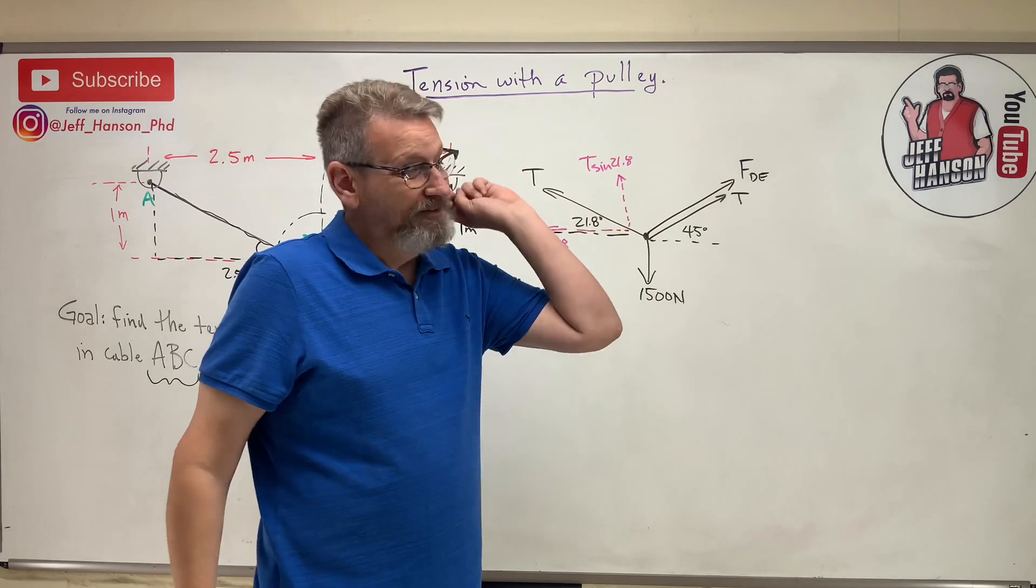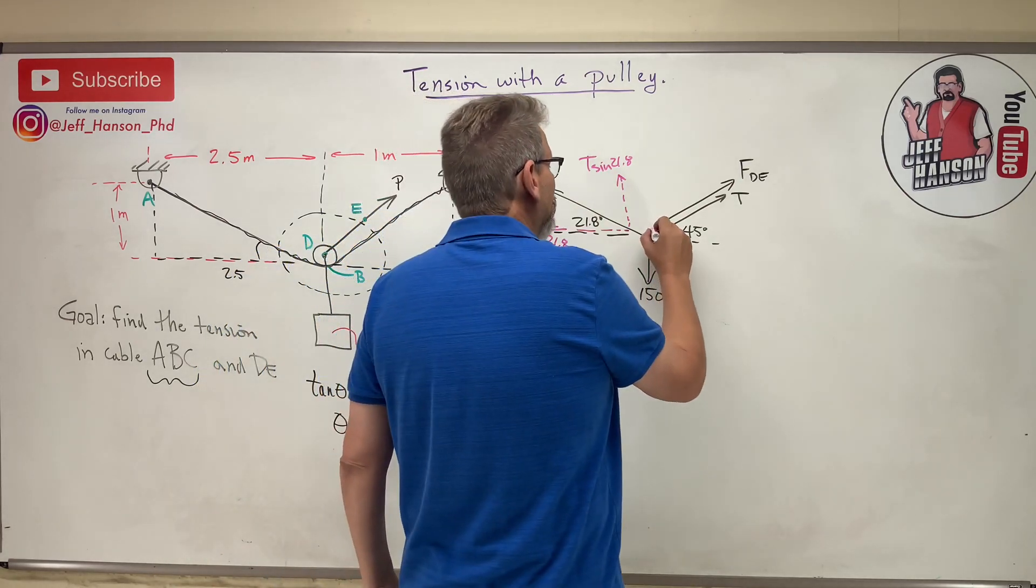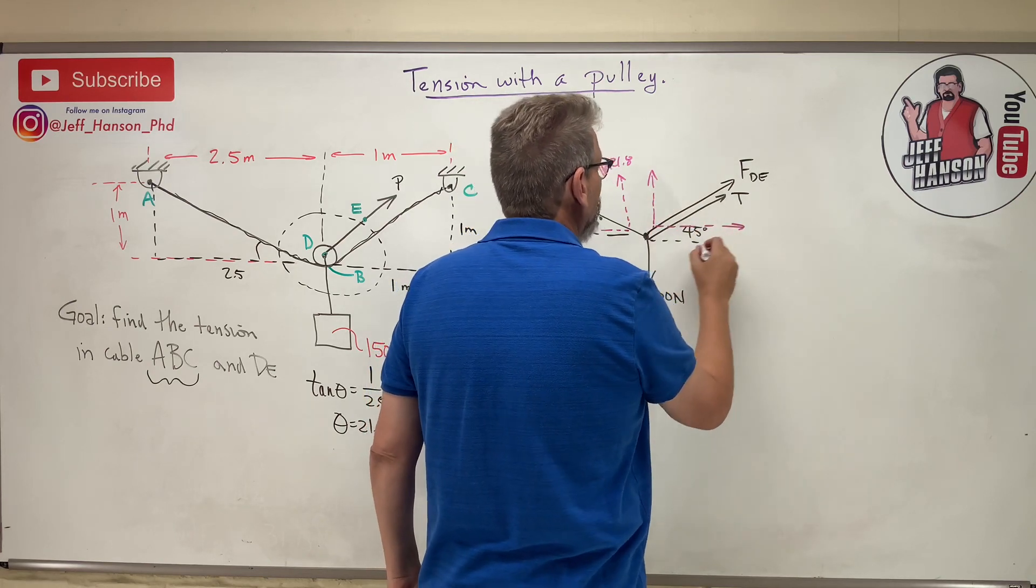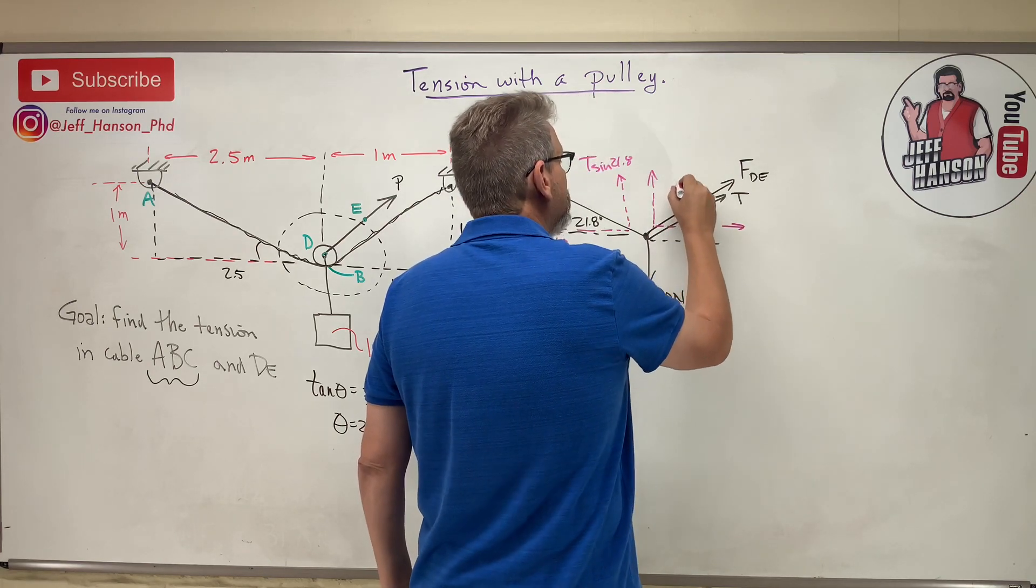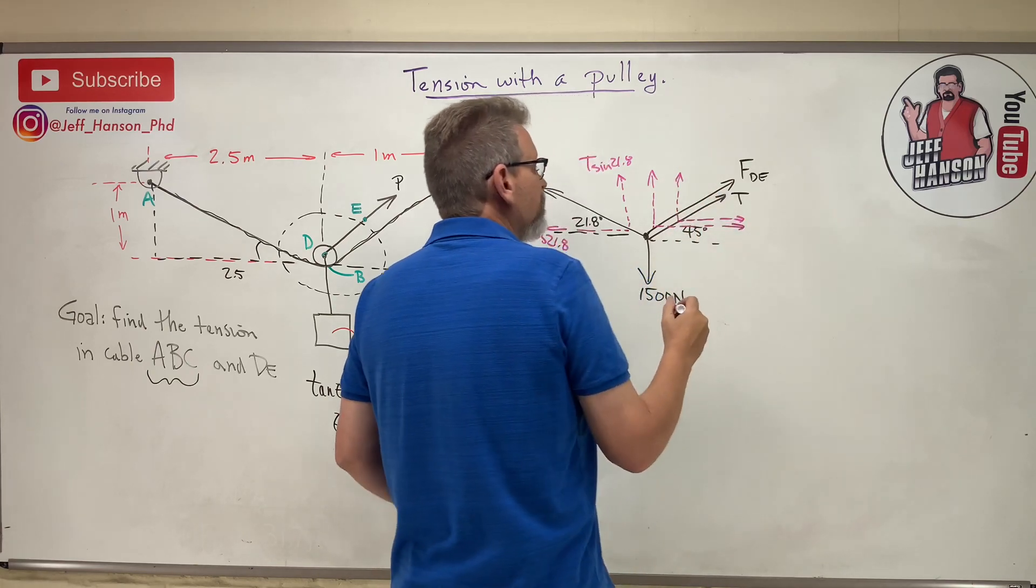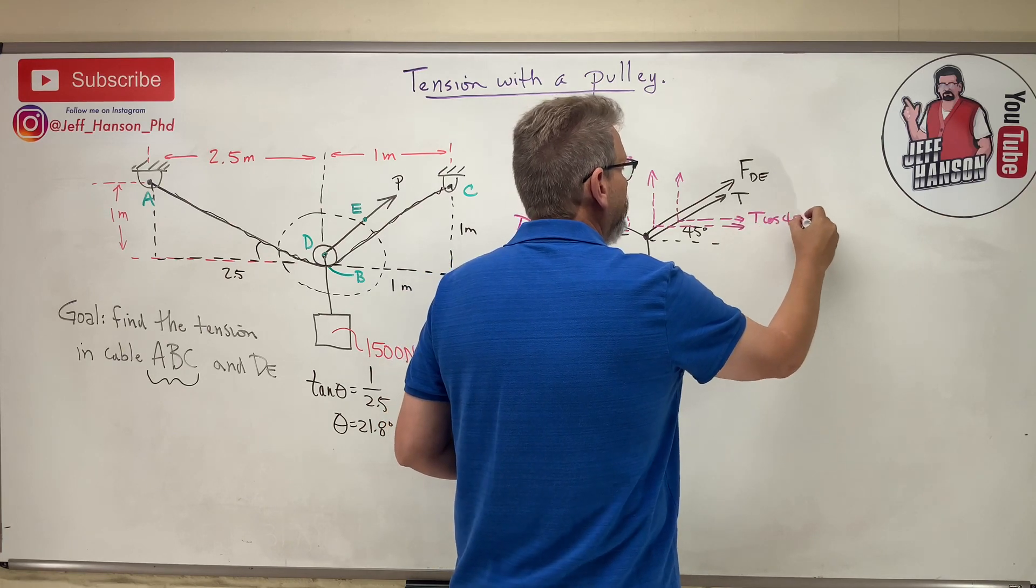Now over here it's a little tricky because I got two cables pulling the exact same direction. So the F cable is going to have one here and one there and one there. So the T cable is going to be T cos 45 and T sin 45.